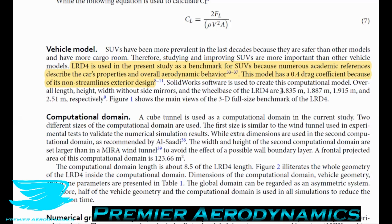The Land Rover Discovery has a drag coefficient of 0.4, which is bad for a car but actually pretty decent considering how blocky it is. Sedans these days are around 0.25 to 0.3, with good ones around 0.22. So having a drag coefficient of 0.4 is horrendous, but that's the type of car it is.